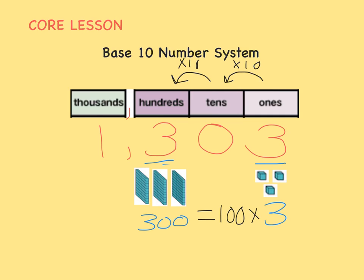We had to do that 2 times, so 10 times 10 equals 100. The 3 in the hundreds place is 100 times greater than the 3 in the ones place.